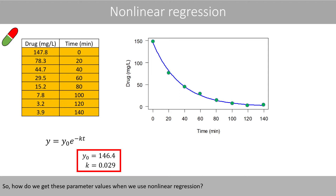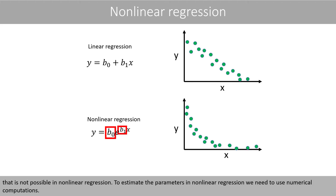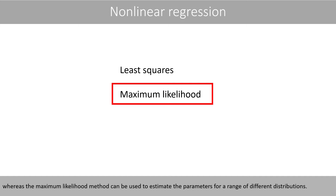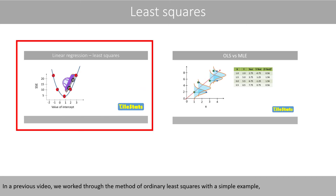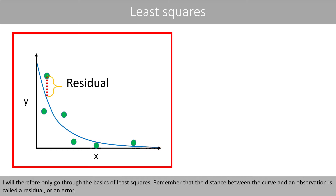How do we get these parameter values when we use nonlinear regression? In comparison to linear regression, where we can estimate the parameters by hand through some math, that is not possible in nonlinear regression. To estimate the parameters in nonlinear regression, we need to use numerical computations. The method of least squares can be used to estimate the parameters given that the data is normally distributed, whereas the maximum likelihood method can be used for a range of different distributions. I will only go through the basics of least squares here.